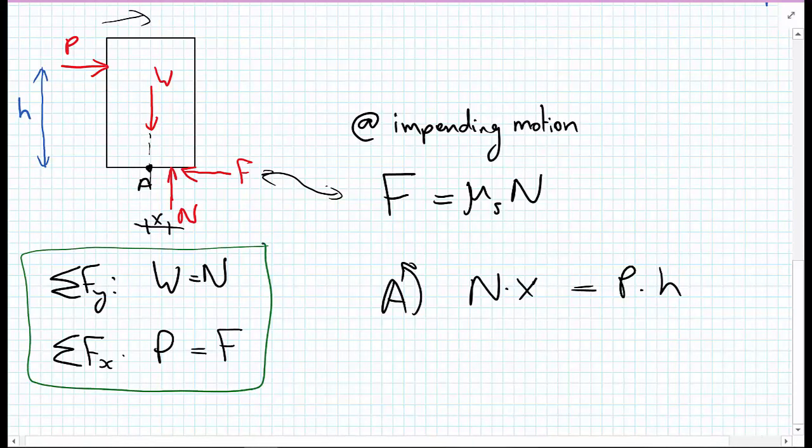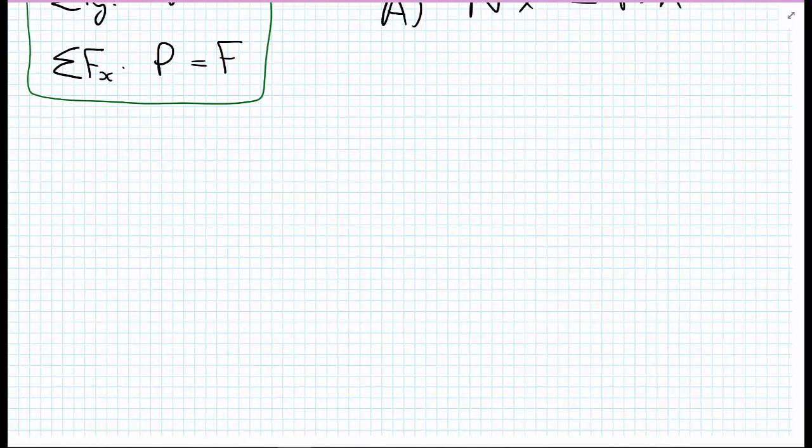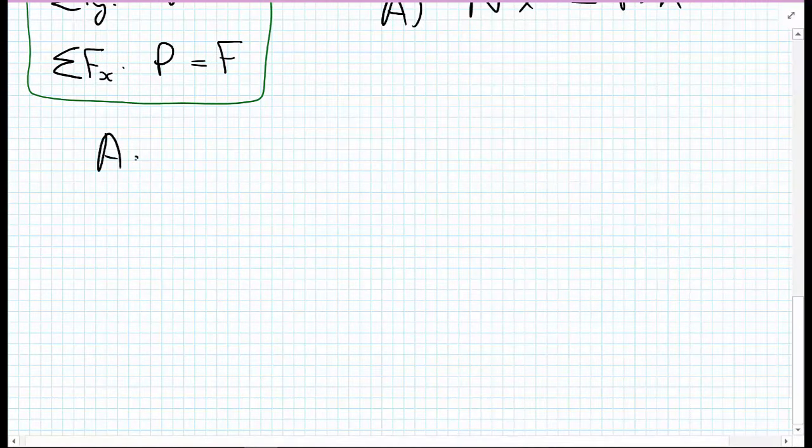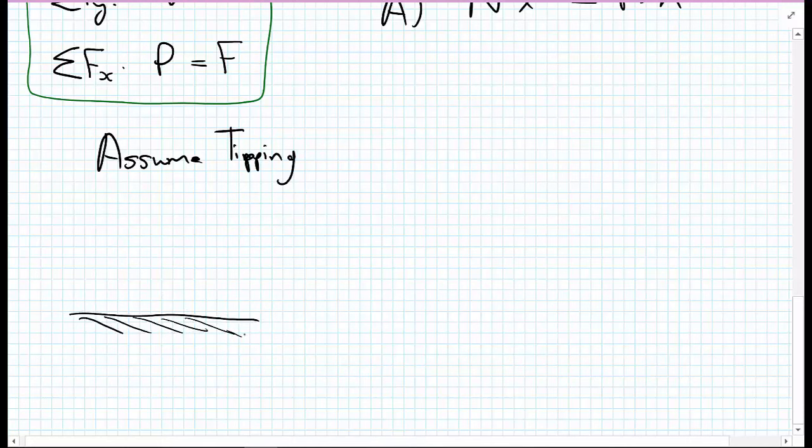Now we're going to draw the free body diagram and assume that the box is tipping. Let's remind ourselves we have the rough surface, and I'm going to exaggerate this slightly, but we have the bottom of the box. The bottom of the box is trying to twist around its corner like this, and as a result of that, this helps us draw the free body diagram for the box.